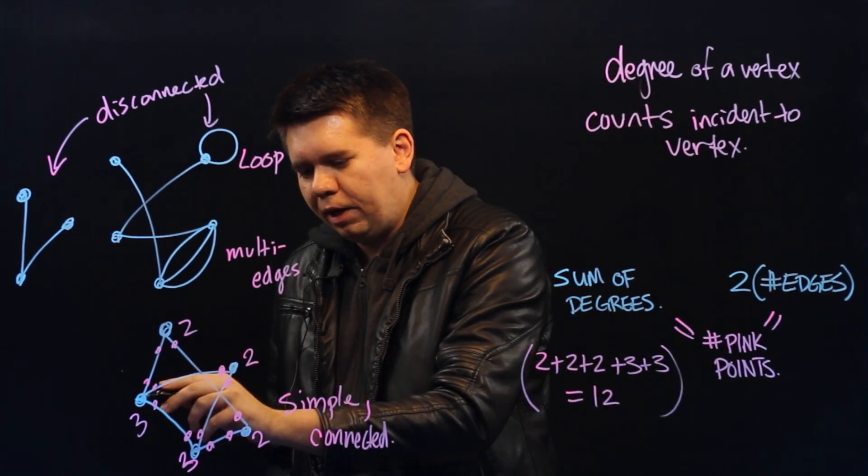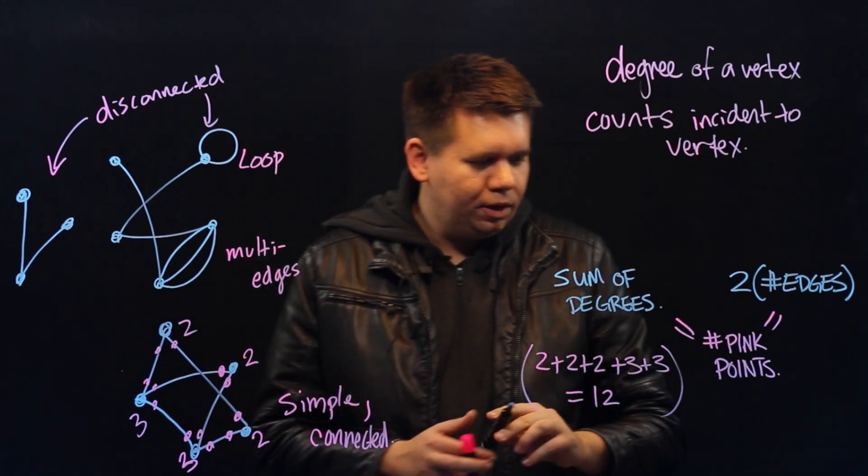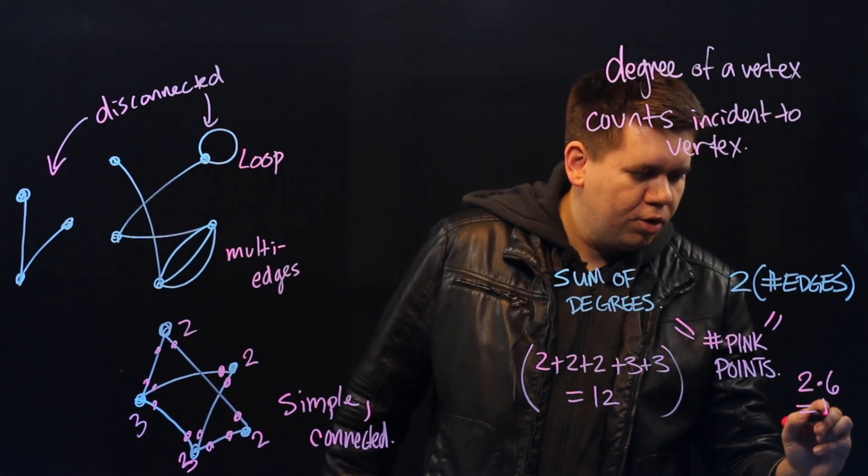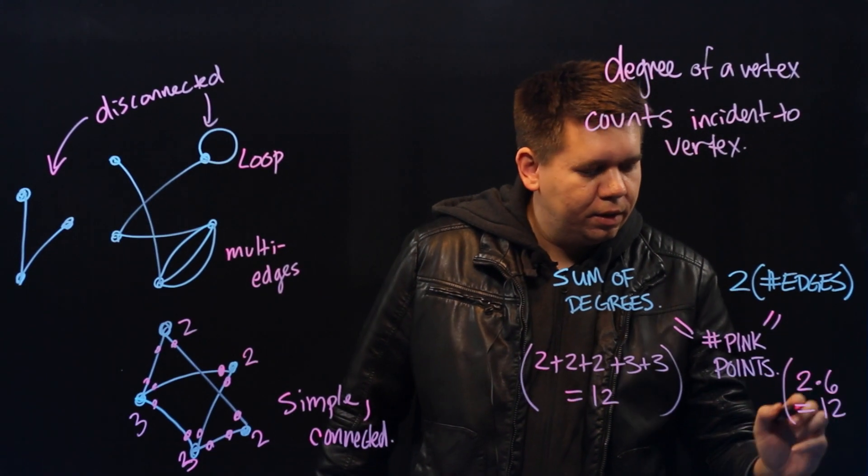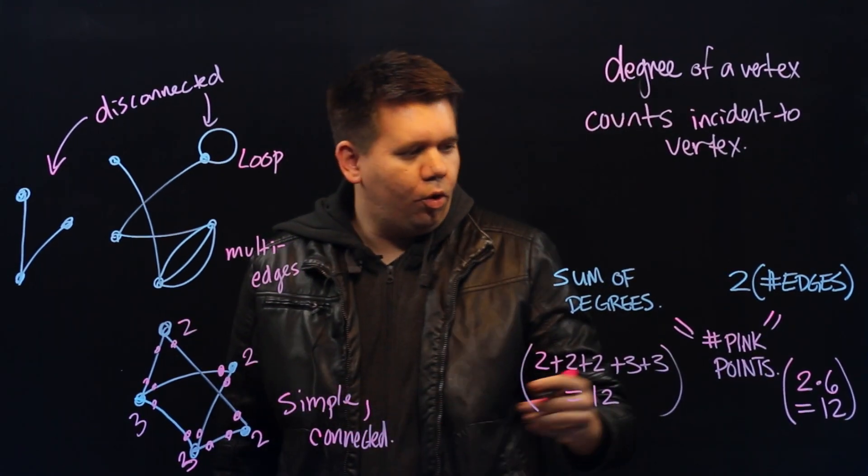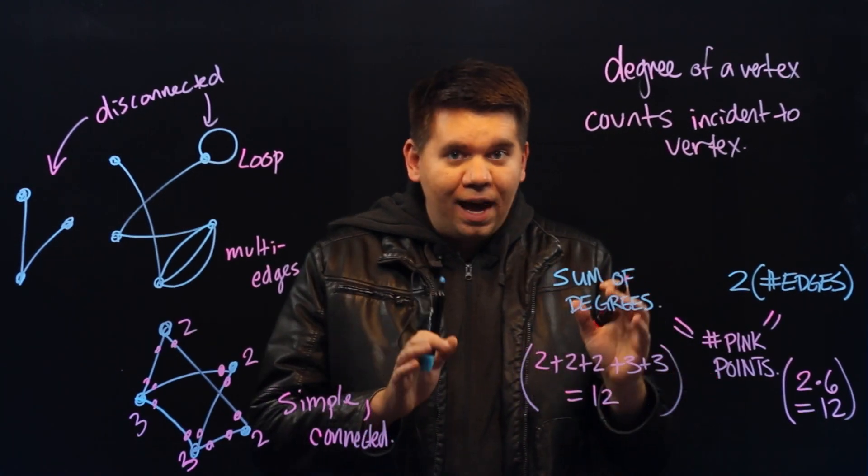In this example, we have one, two, three, four, five, six edges. So we expect there to be two times six, or twelve pink points. Either way you count it, by summing the numbers or by counting as two times the number of edges, you get the same value.